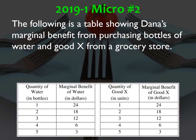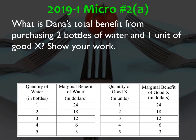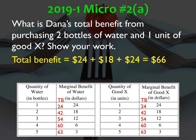Number two: the table shows Dana's marginal benefit from purchasing bottles of water and good X from a grocery store. Part A: what is Dana's total benefit from purchasing two bottles of water and one unit of good X? The table gives marginal benefit for both water and good X, so to find total benefit, add the marginal benefits together. For two bottles of water her total benefit is 24 plus 18, or $42. For one unit of good X it's $24. So 42 plus 24 is $66.